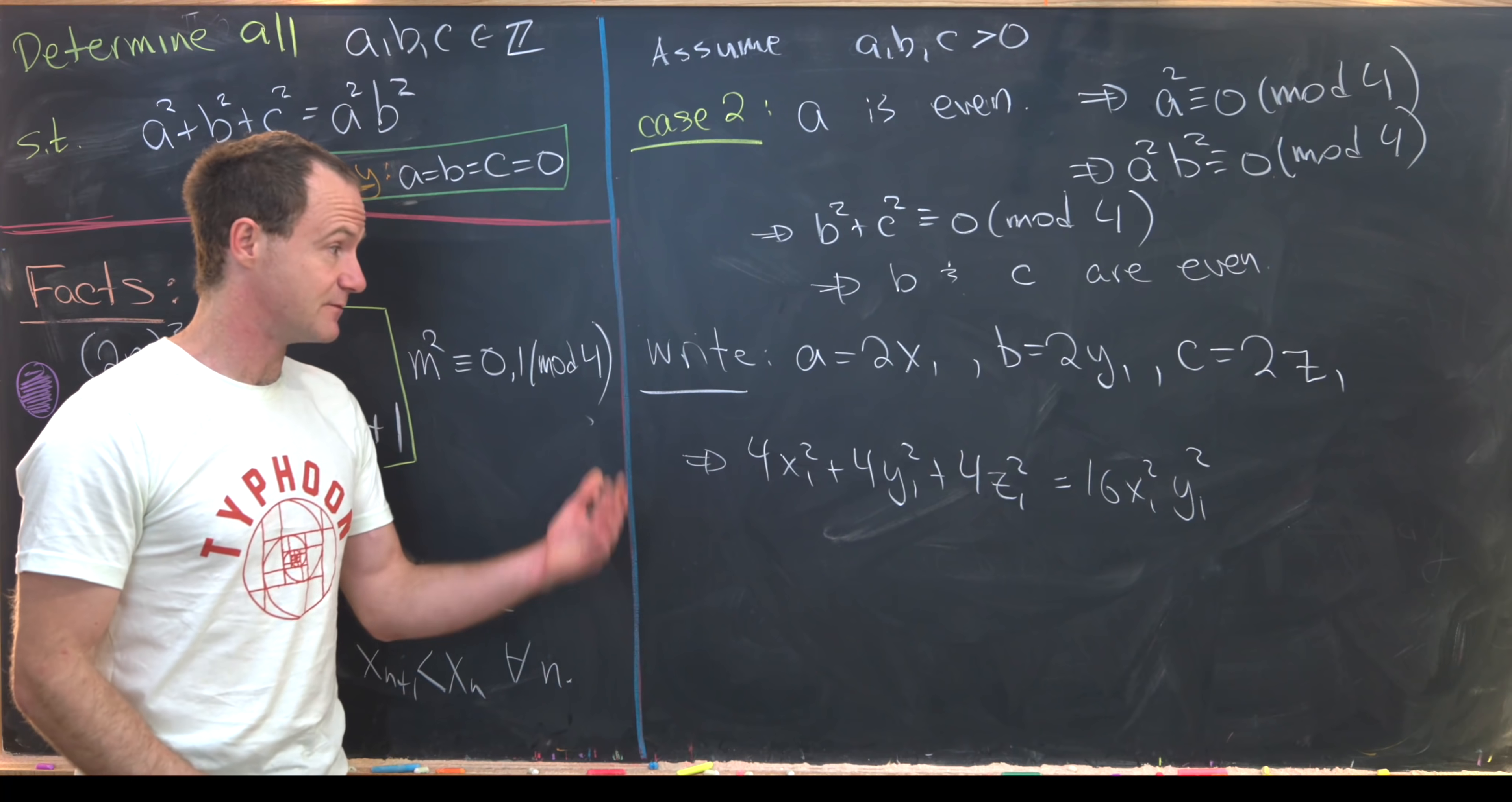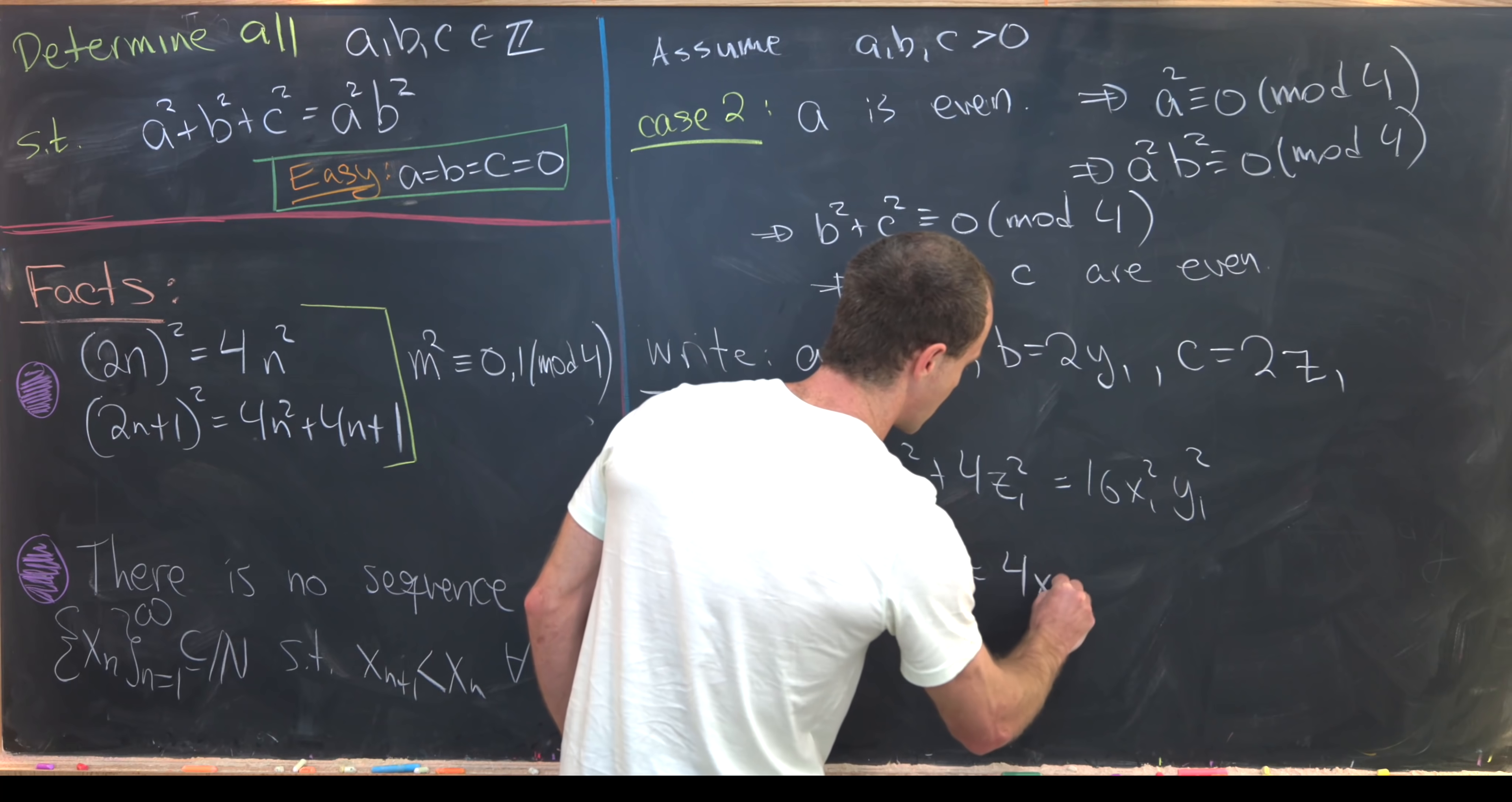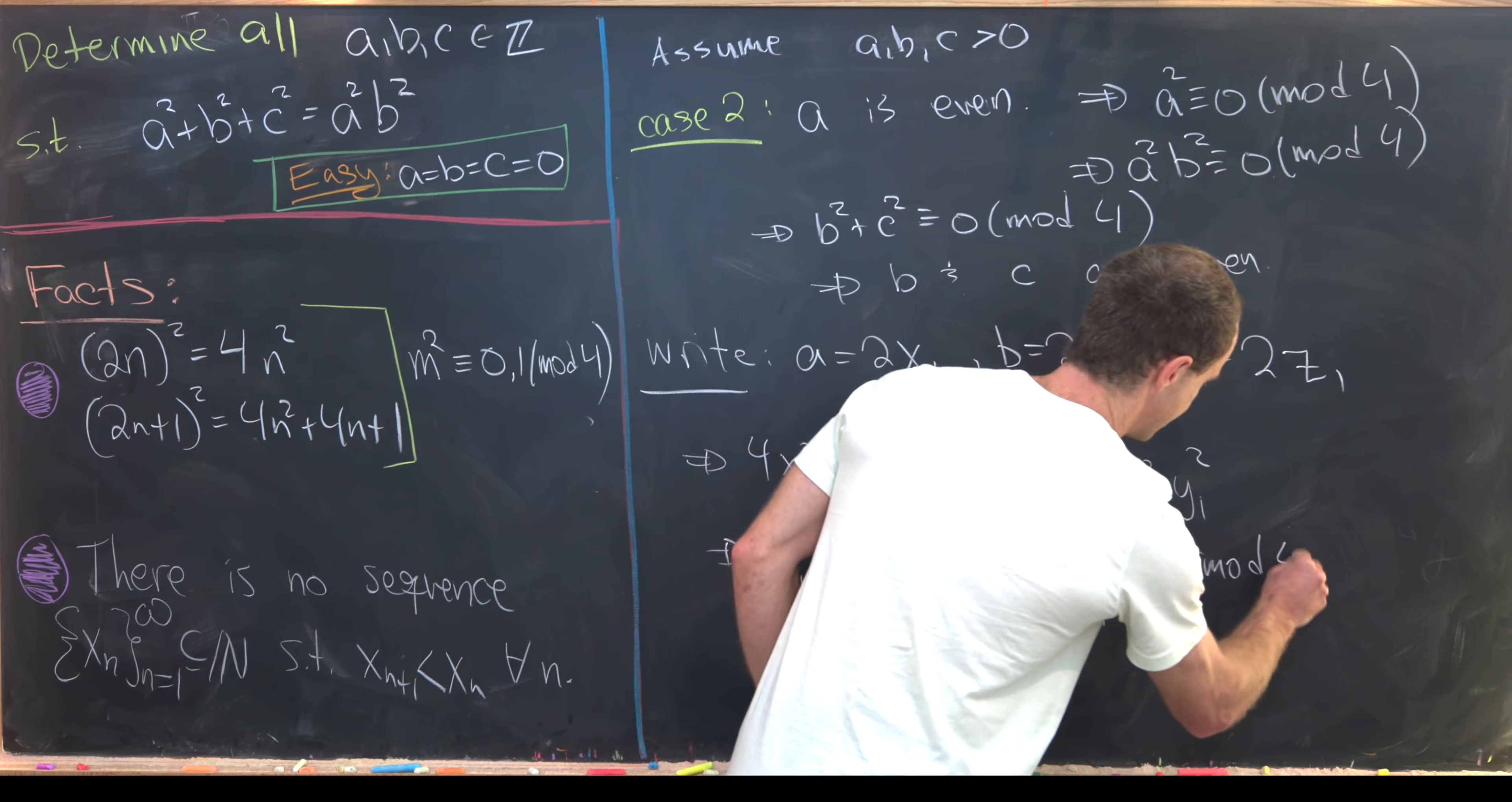Now we can divide both sides by 4. That tells us that x₁² + y₁² + z₁² = 4x₁²y₁². But now let's reduce this mod 4 again. Notice the right-hand side is clearly 0 mod 4.